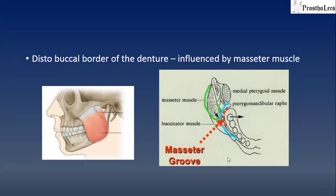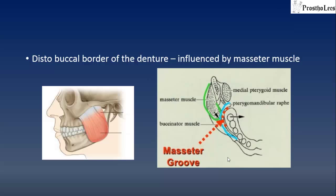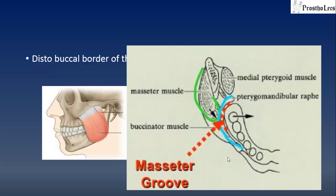In this illustration on the left we can see the attachment and insertion of the masseter muscle on the skull. The distobuccal border of the denture is influenced by the masseter muscle. On the right side is a cross-section showing how the contraction of the masseter muscle creates pressure on the fibers of the buccinator muscle and causes a groove on the soft material used to record borders. This is called the masseter groove. You can see how the masseter muscle, marked in green, causes a dent in the buccinator muscle, marked in sky blue, which in turn creates a notch in the impression material.